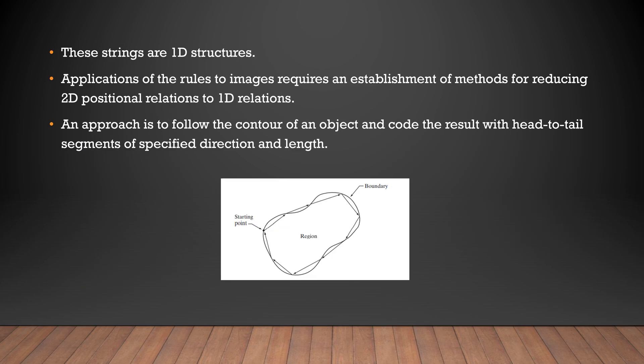These strings are 1D strings. Application of the rules to images requires an establishment of methods for reducing 2D positional relations to 1D. Most applications of strings to image description are based on extracting connected line segments from objects of interest. One approach is to follow the contour of an object and code the result. In the figure, we code the boundary region by direct line segments.